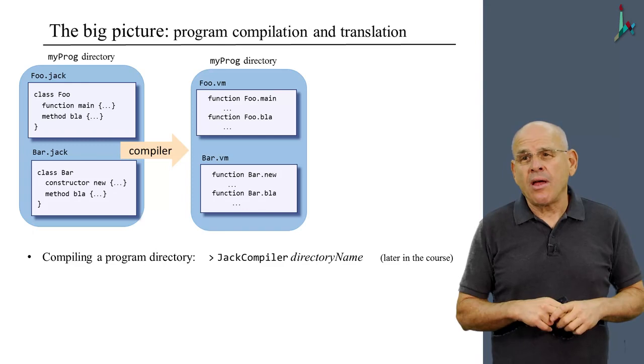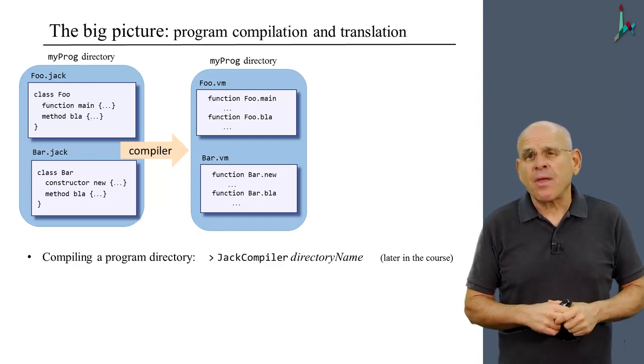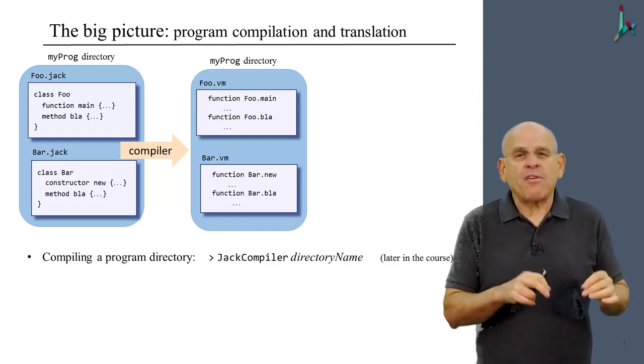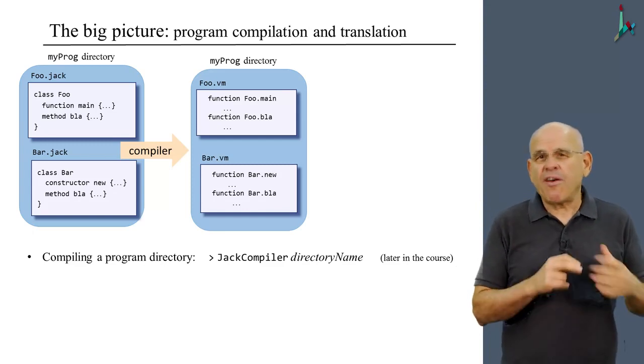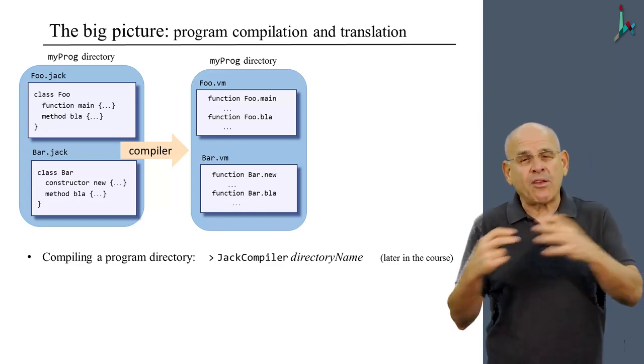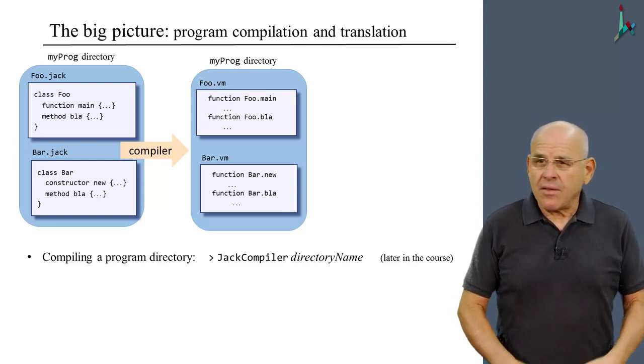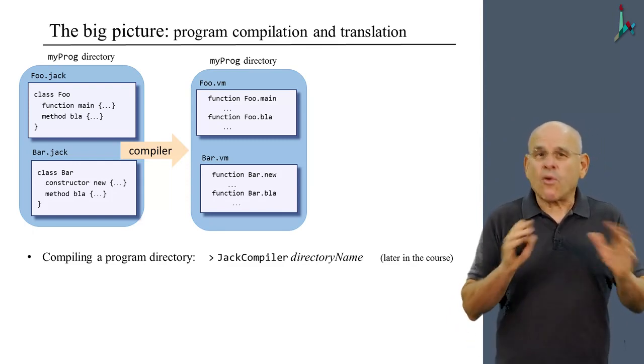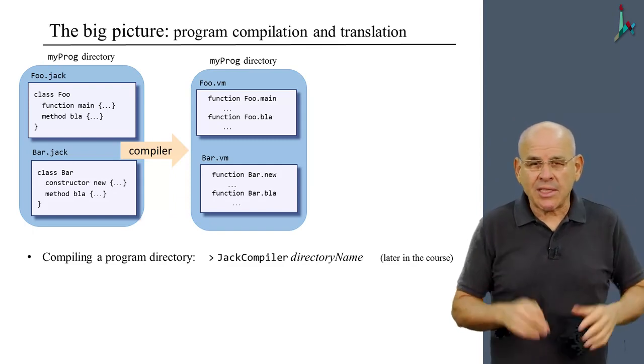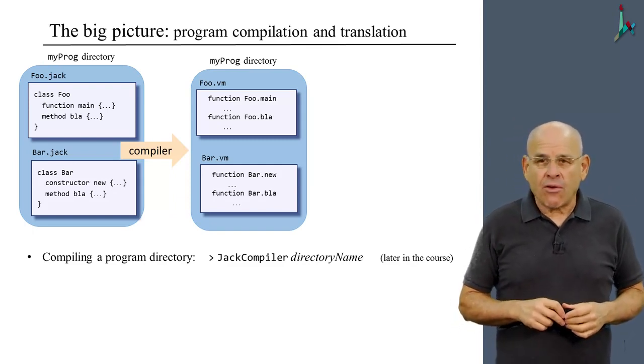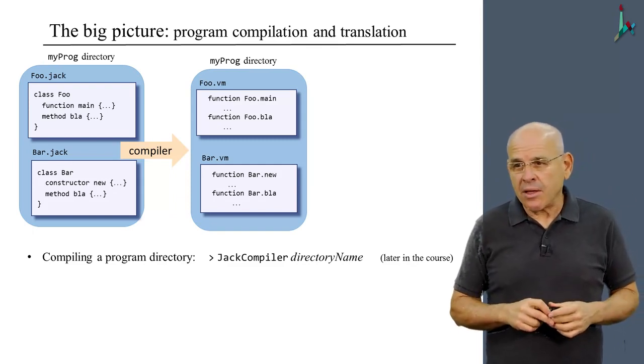The other one is going to be called bar.vm. Every method, constructor, and function in the source code is going to be translated into a VM function in the target code. This process is something that you don't have to worry about, because we're going to discuss it at length later on in the course when we build the compiler.